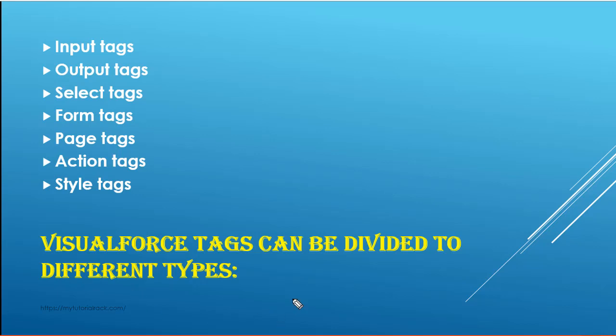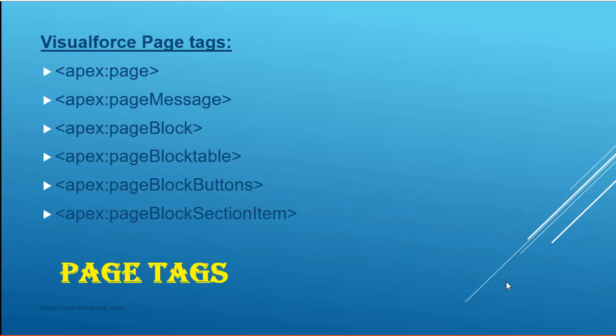So let's start with our first category, which is page tags. The different tags available under the page tag category are: apex:page, pageMessage, pageBlock, pageBlockTable, pageBlockButtons, and pageBlockSectionItems. These are some of the important page tags that are available.